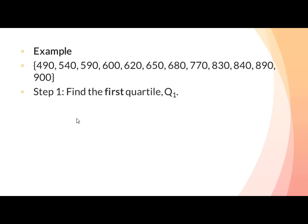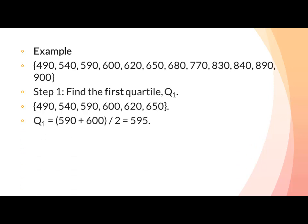Step 1: find the first quartile Q1. پہلے چھ values ہمارے پاس first quartile ہیں۔ اس first quartile کا median معلوم کرنے کے لیے دو middle values 590 اور 600 لیتے ہیں۔ 590 + 600 = 1190, divided by 2 = 595 — یہ first quartile کا median ہے۔ Values even ہونے کی وجہ سے دو central values لیے گئے۔